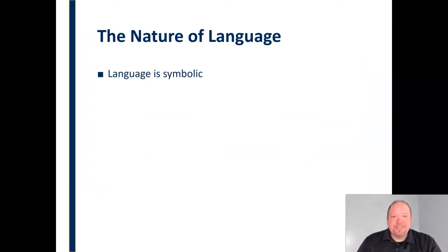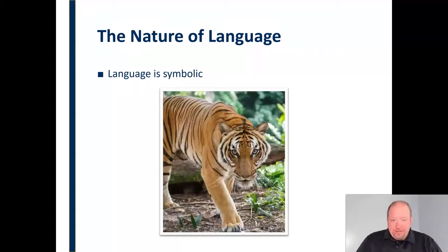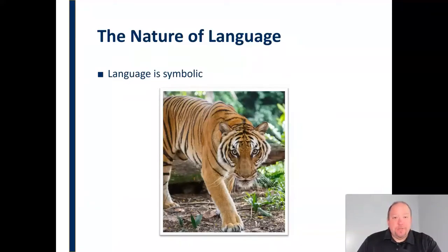First, we need to understand that language is symbolic — it just represents an idea or an object. If I were to say the word tiger, T-I-G-E-R, we automatically think of this big cat with stripes. It's not because the word tiger has magical qualities, but because we've agreed in English that those letters in that order represent this big cat. That's what we mean when we say language is symbolic, and really all communication is symbolic.